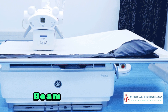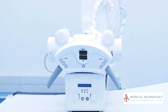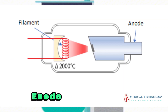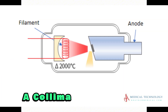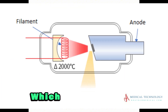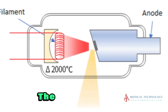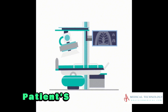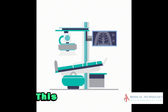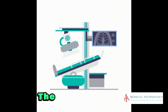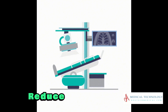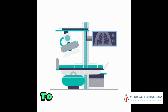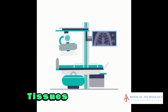X-ray beam formation. The X-ray beam produced at the anode passes through a collimator, which shapes and limits the X-ray beam to the specific area of interest in the patient's body. This helps focus the X-rays and reduce unnecessary radiation exposure to surrounding tissues.